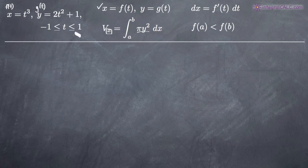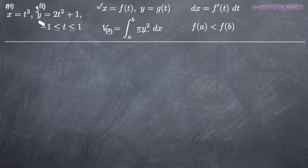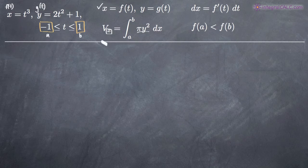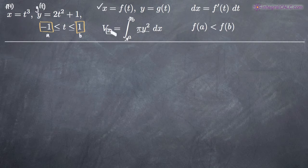The only thing we need to determine when dealing with volume of revolution is which of your limits of integration produces a larger value when you plug it into f of t. We have limits of integration negative 1 and positive 1. When dealing with either area under the parametric curve or volume of revolution for a parametric curve, you actually have to plug in these limits of integration into your equation for x, or f of t. We have x equals t cubed.